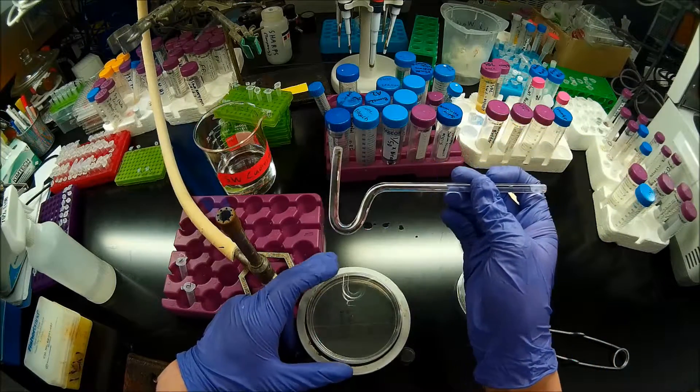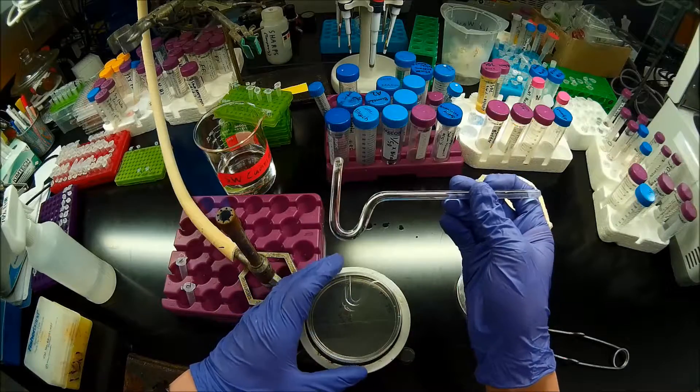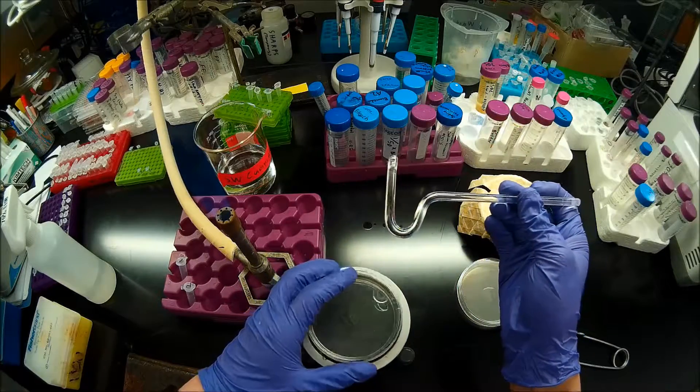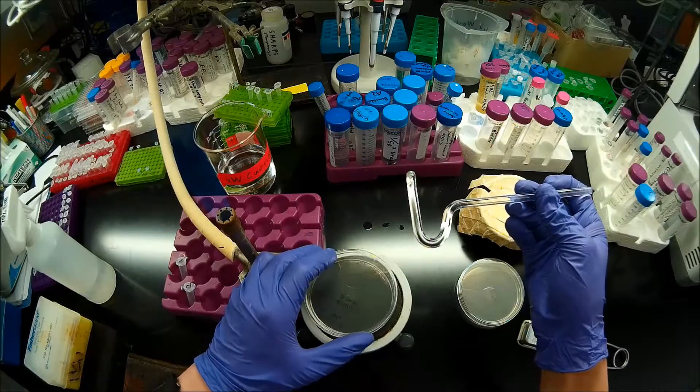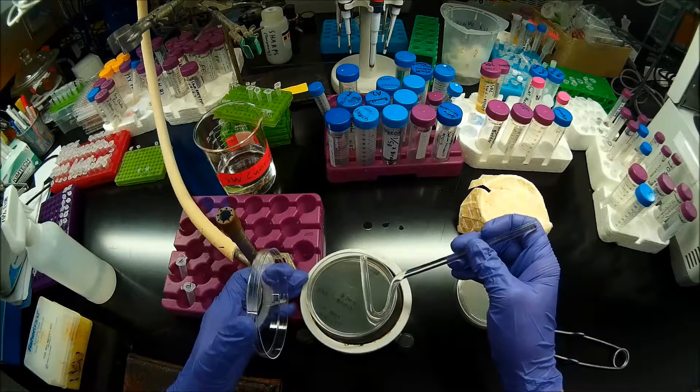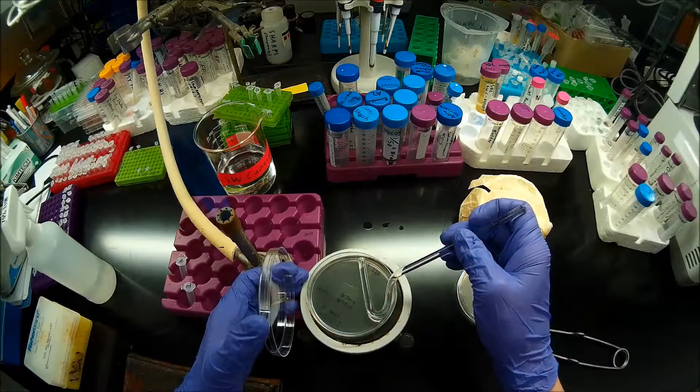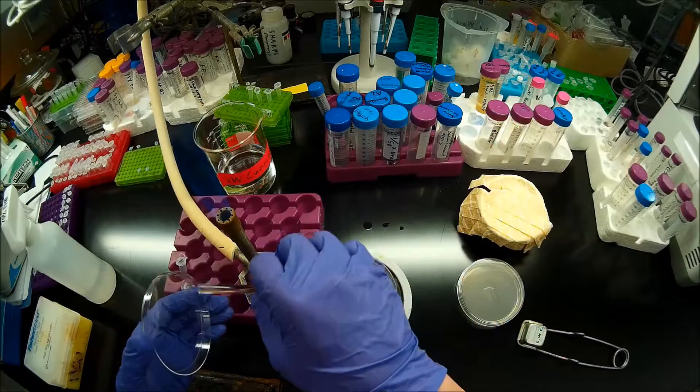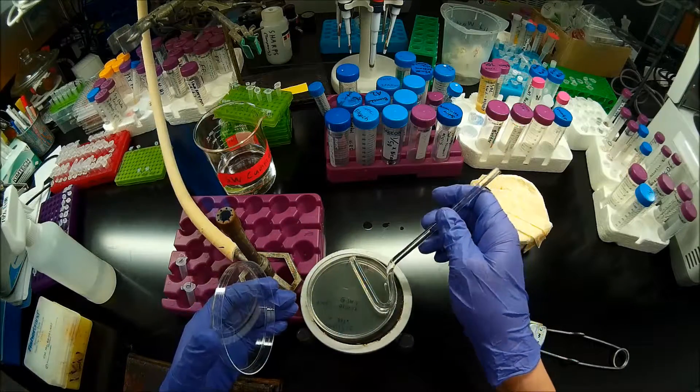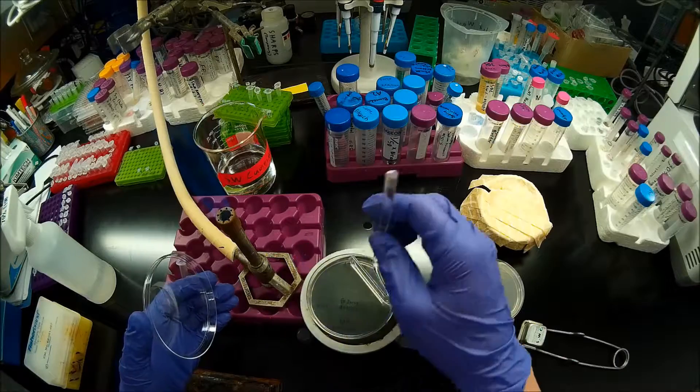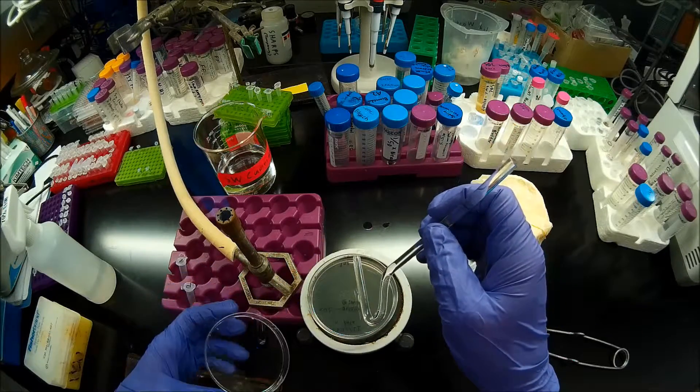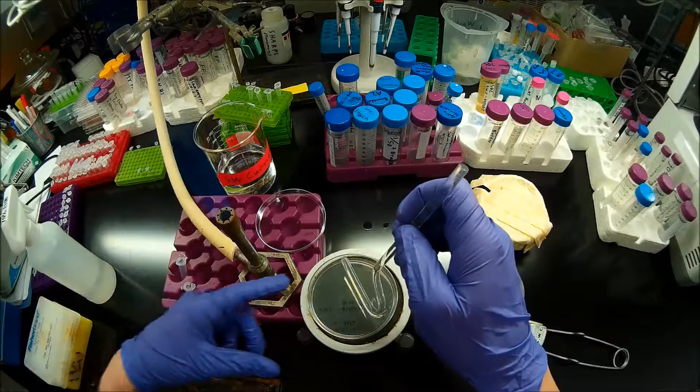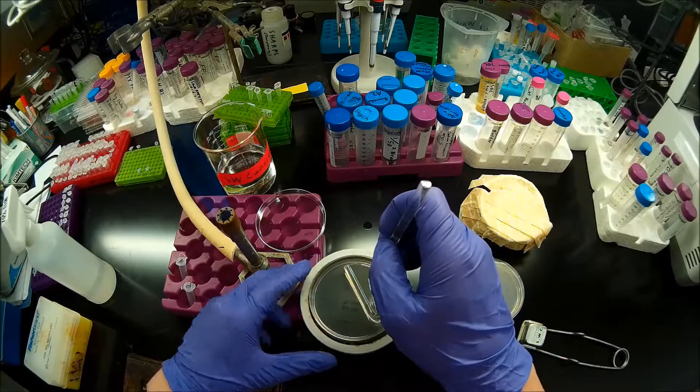Now, this is still pretty warm. Not as warm as it would be if I'd held it in the flame, but it's still warmer than I want it to be when I'm contacting my cells. So when I put it on the plate, I'm actually going to touch it to the plate away from where my cells are, away from where I've dispensed my cells. And I'm going to rock that spreader back and forth a couple times to cool it down on the agar before I go and spread my cells. And that's what I'm going to do now.